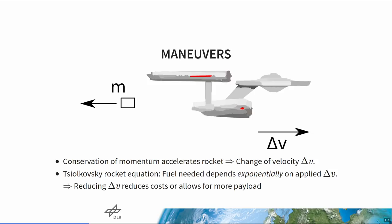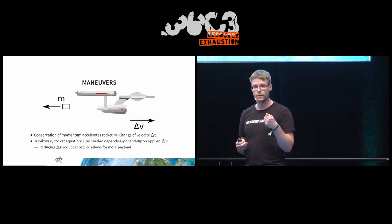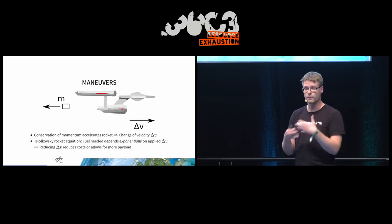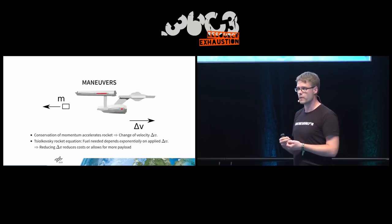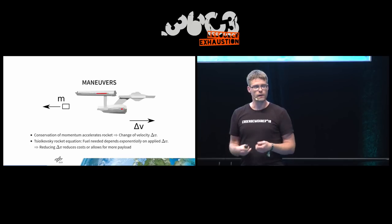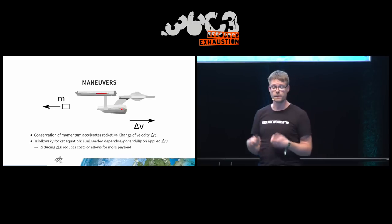Unfortunately, it's pretty expensive to apply a lot of delta-v. This is due to the Tsiolkovsky rocket equation: the fuel you need to change your velocity by some delta-v depends essentially exponentially on the target delta-v. So we really need to use as little delta-v as possible to reduce the needed fuel. One reason is to reduce costs by carrying less fuel; but also, if we use less fuel we can bring more payload — more mass for missions and science experiments. That's why in spacecraft mission design we have to carefully minimize delta-v spent during maneuvers.